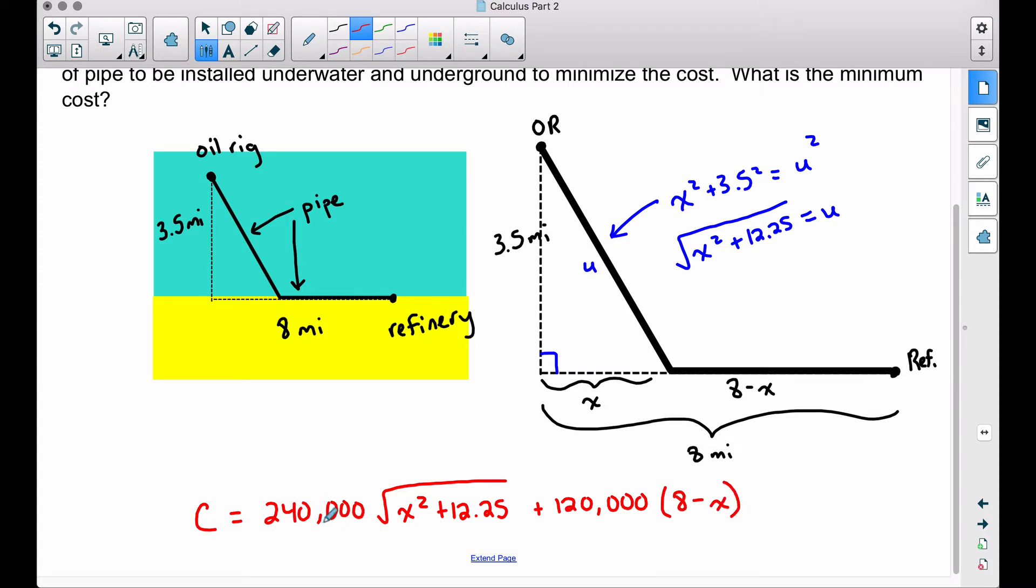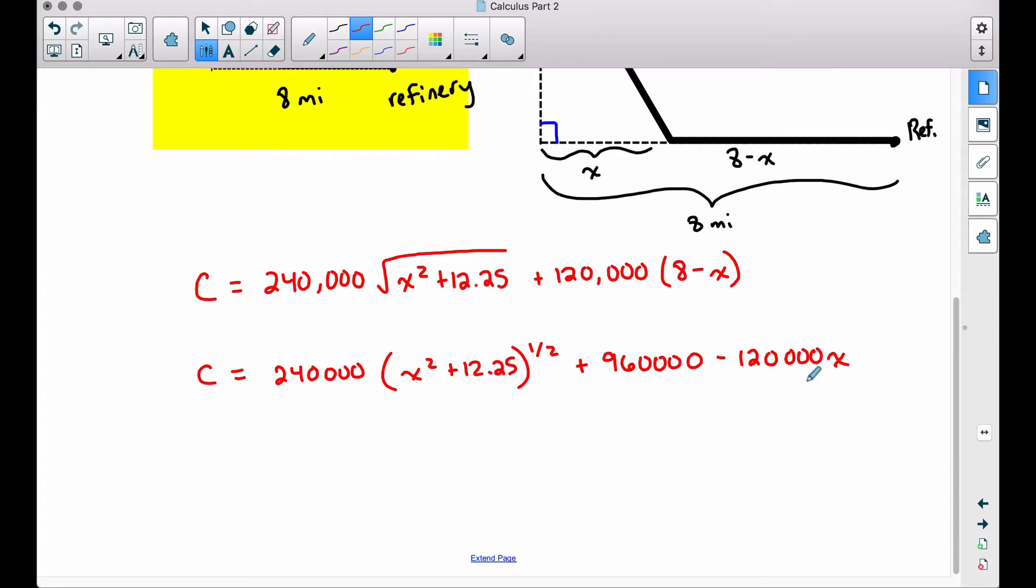So we have $240,000 per mile times the number of miles underwater plus $120,000 per mile times the number of miles underground. This is the cost function. We have everything in terms of x. And since we want to minimize this, let's find the derivative. Let's set it equal to zero. Before doing that, I will simplify this out. I'm rewriting this square root, raising it all to the 1 half. And then I went ahead and distributed the $120,000 to the 8 minus x there.